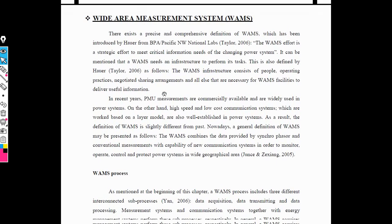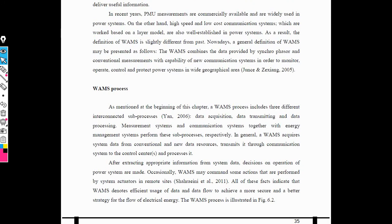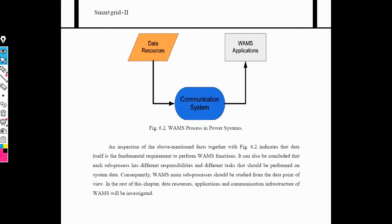WAMS depends on different processes: sending all data, verifying all data, and sending to the control center. Data and applications are very important in wide area measurement system. This process is applicable in power systems. WAMS is applicable only in power systems and makes it easy to access all parameters from generation side to distribution side. WAMS depends on communication infrastructure, and two-way communication is very important in wide area measurement system.